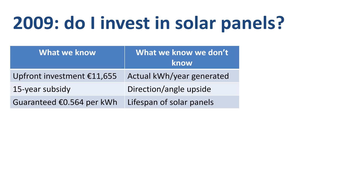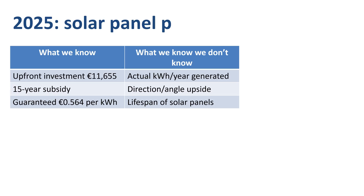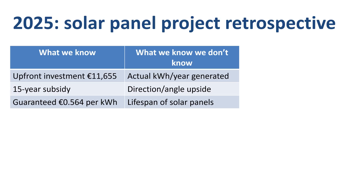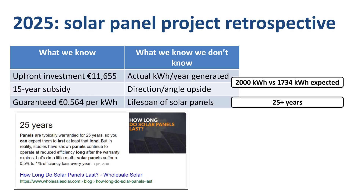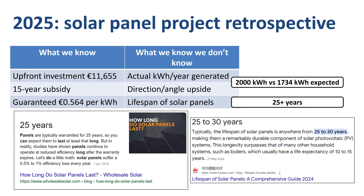Here we are in 2025, and it is time for a retrospective look at the investment. Actual generation per year was around 2,000 kWh versus the originally expected 1,700. Based on usage data, the typical lifespan turns out to be 25 years or more, versus the originally expected 15 years. All of the factors that back in 2009 were in the 'what we know we don't know' category turned out to be favorable.